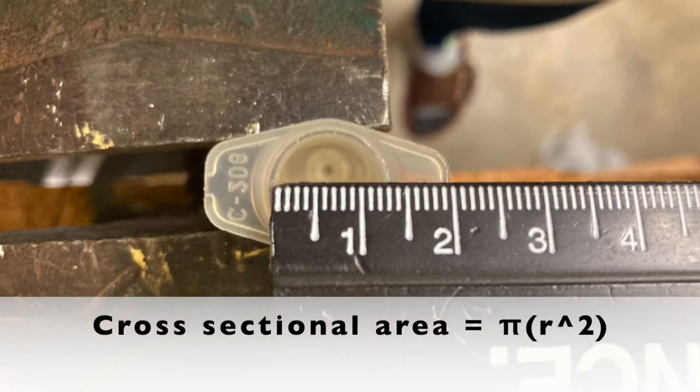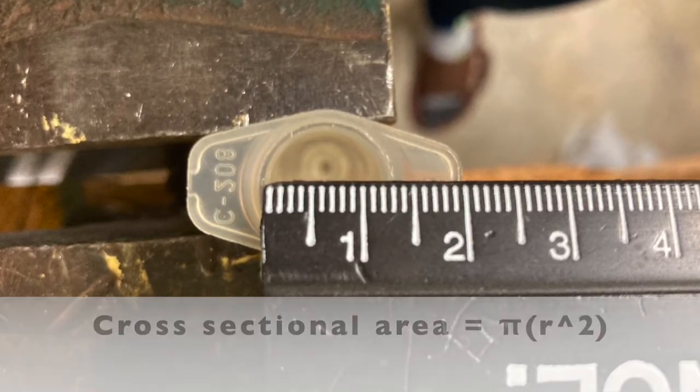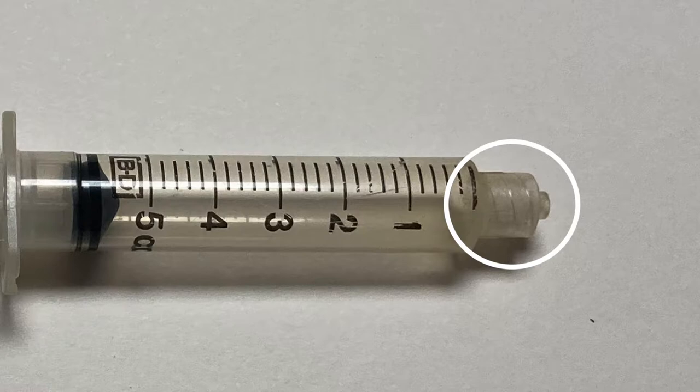You'll also need to record the cross-sectional area of the syringe, and you'll need to account for the dead volume within the tip of your syringe, which is not accounted for by the volume markings on the side.